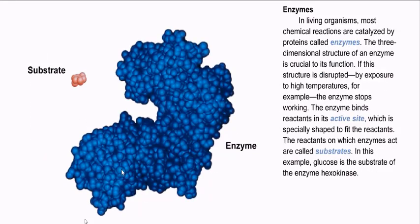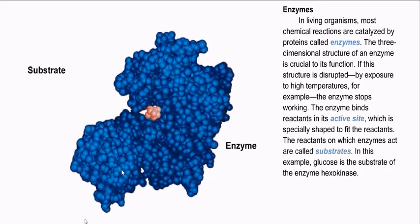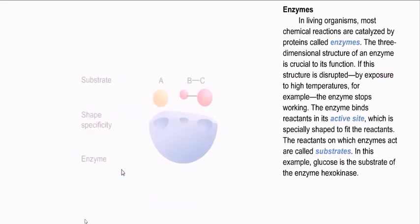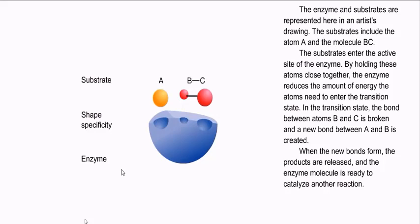In living organisms, most chemical reactions are catalyzed by proteins called enzymes. The three-dimensional structure of an enzyme is crucial to its function — if this structure is disrupted by exposure to high temperatures, the enzyme stops working. The enzyme binds reactants in its active site, which is specially shaped to fit the reactants. The reactants on which enzymes act are called substrates. In this example, glucose is the substrate of the enzyme hexokinase. The substrates enter the active site of the enzyme, and by holding these atoms close together, the enzyme reduces the amount of energy the atoms need to enter the transition state.